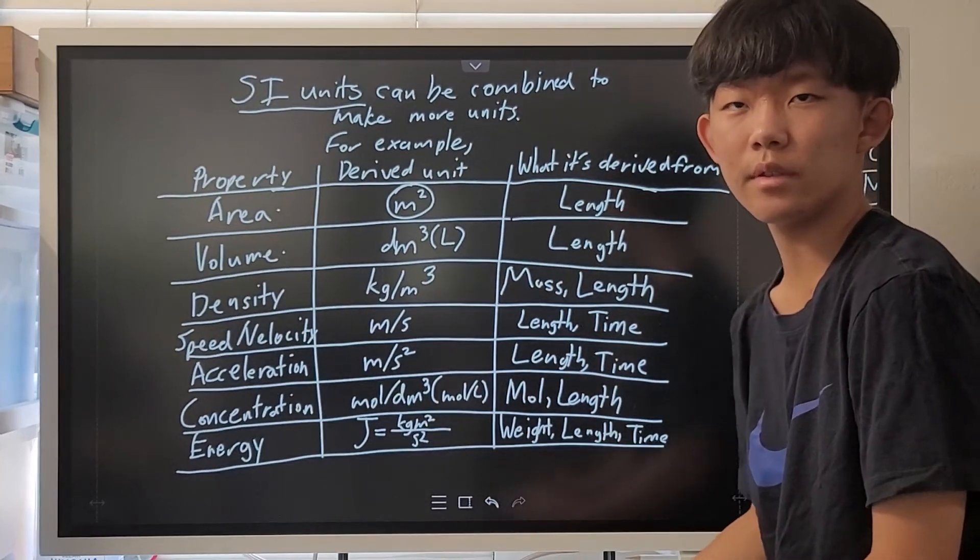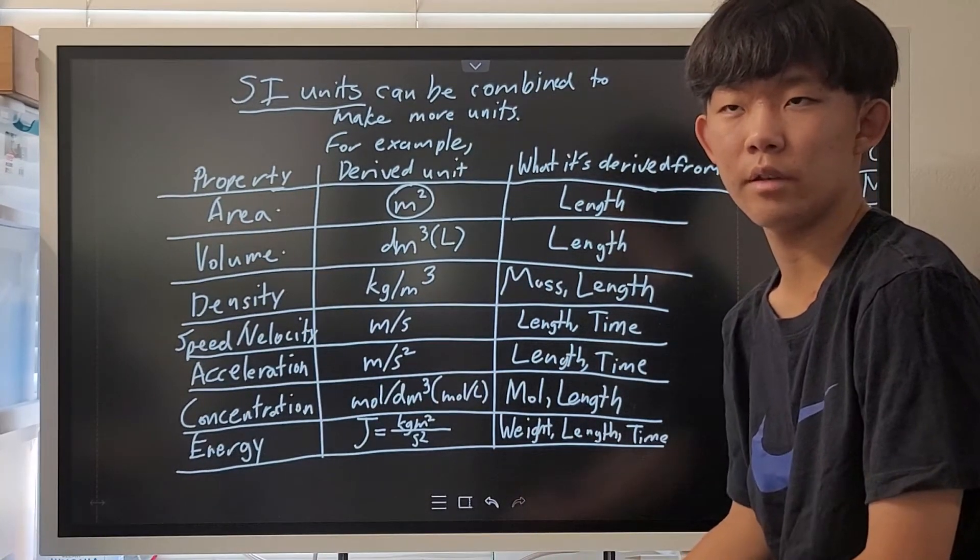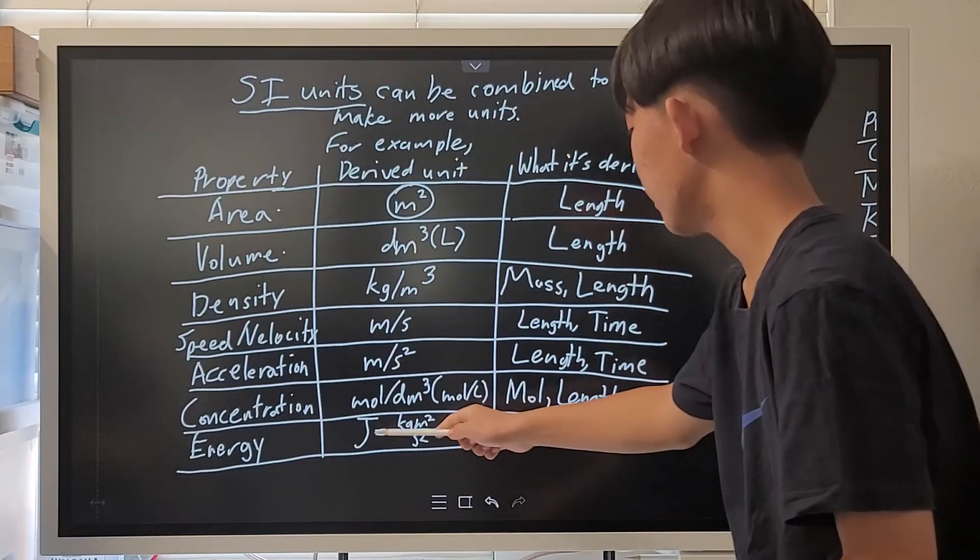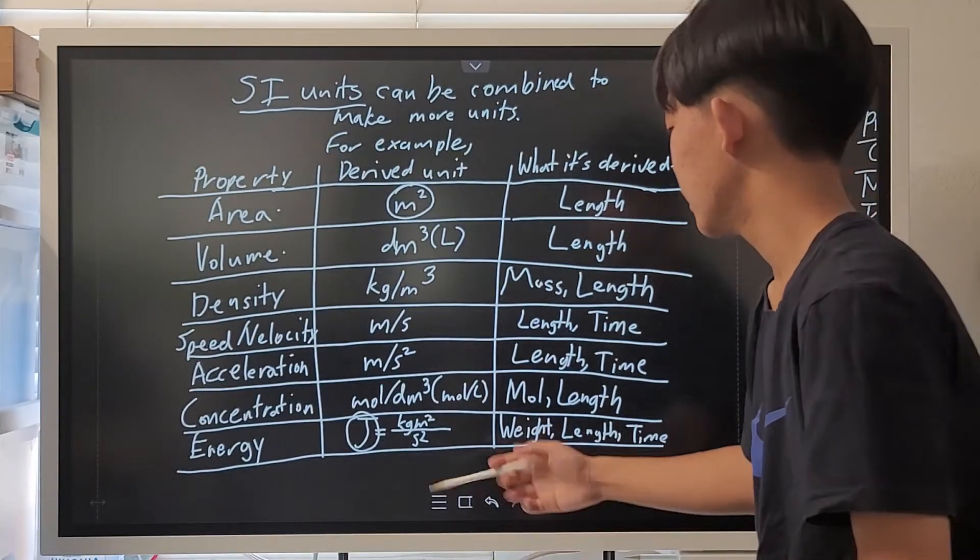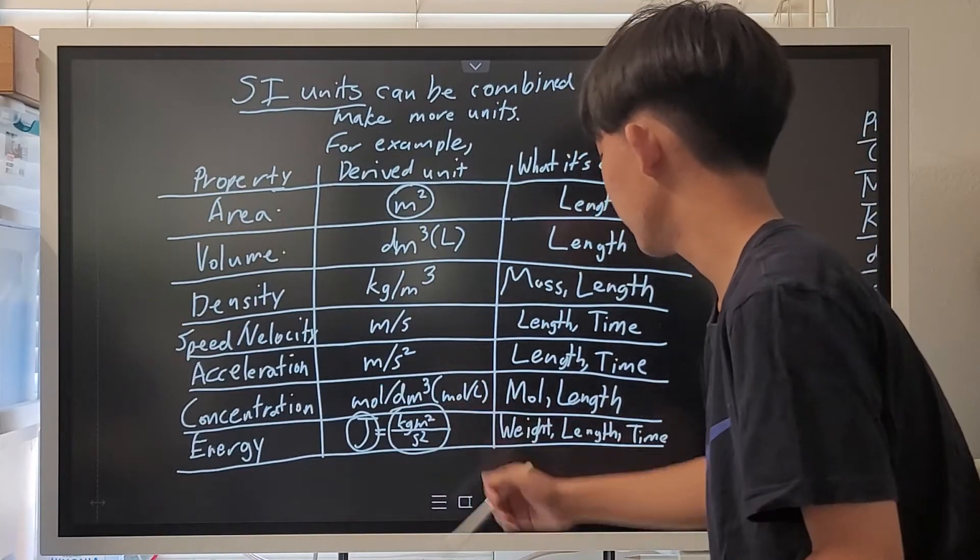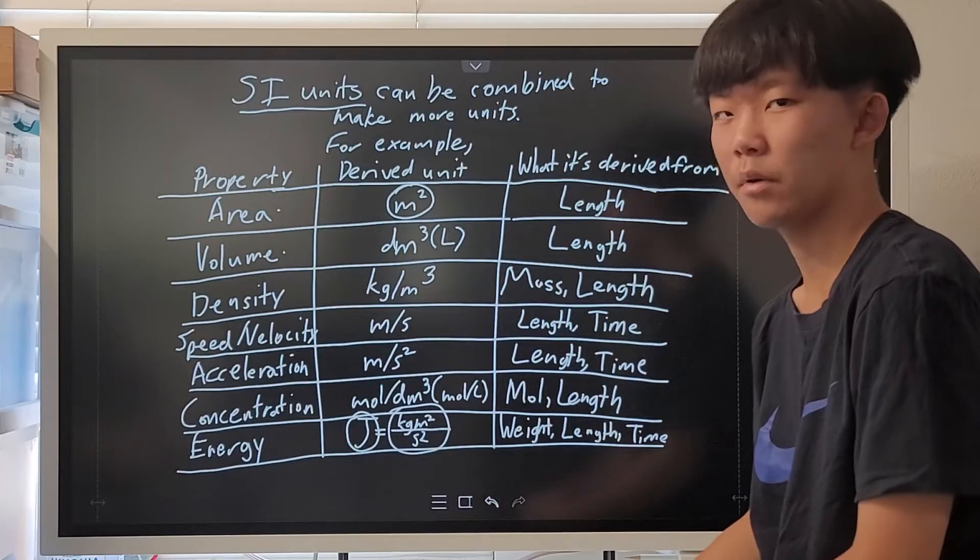However, some derived units can have multiple derivations. For example, energy, measured in joules, is derived from weight, length, and time, since one joule is defined as one kilogram times meter squared per second squared.